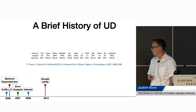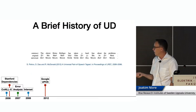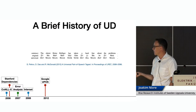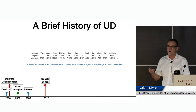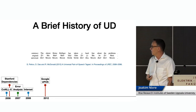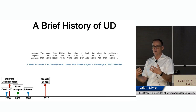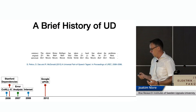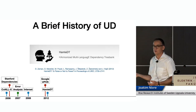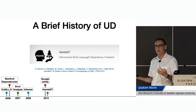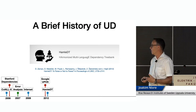A few years later, researchers at Google, including Ryan, then launched this universal part-of-speech tagset including 12 categories, which was actually based on the old error analysis that we had done in 2007, but they added a few categories and took a more principled approach. Meanwhile, Dan and his colleagues in Prague had taken this one step further and tried to harmonize not only part-of-speech categories, but also full dependency trees — syntactic representations — in the HamleDT collection of treebanks, essentially by converting them all to a version of the Prague dependency treebank scheme.